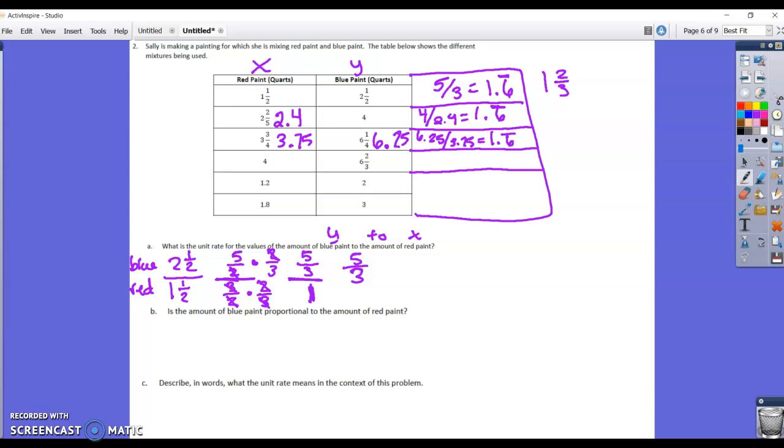So 6 and two-thirds divided by 4. We can actually at least save a little space. We can change that. 6 times 3 is 18, plus 2 is 20 over 3. So we're going to do 20 over 3 divided by 4. Keep, change, flip.